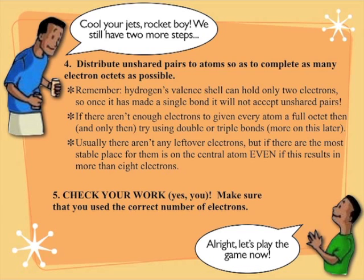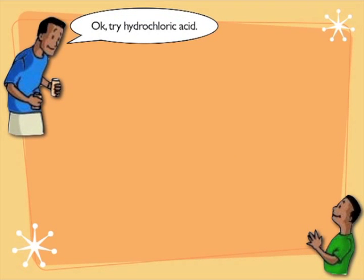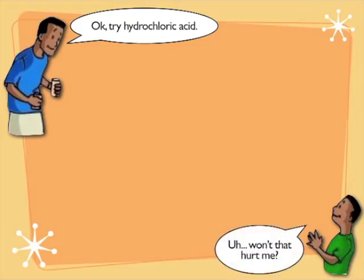Then check your work. The most common mistake is people draw legitimate Lewis dot structures using the wrong number of valence electrons. So go back and make sure everybody's got the right number of electrons around them. Let's go through one example in this lesson.